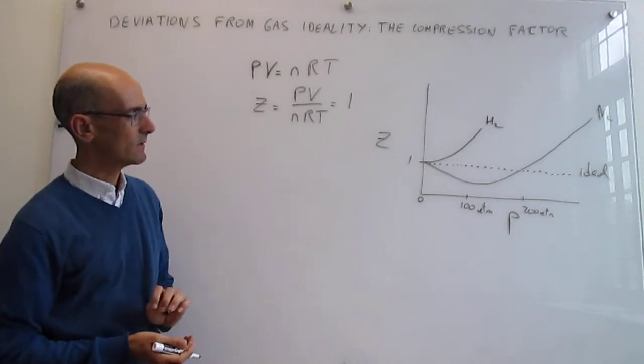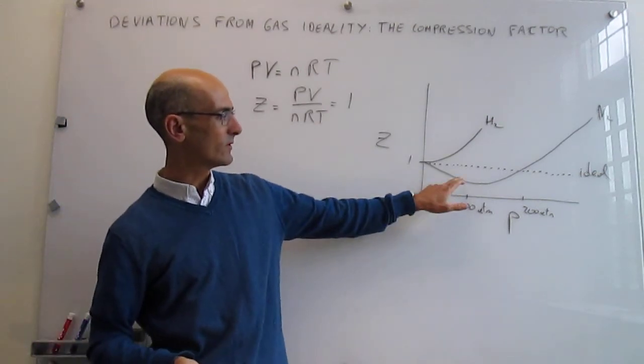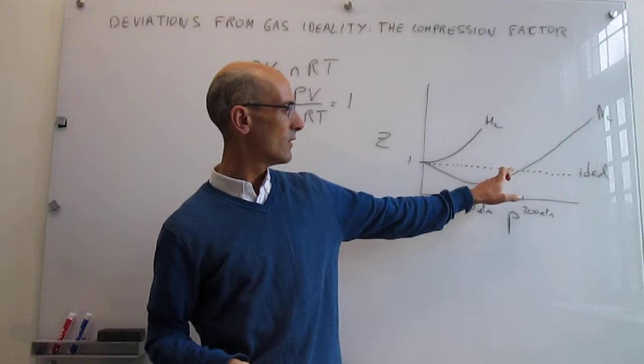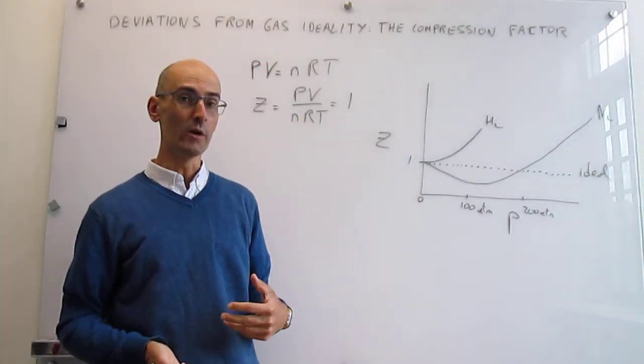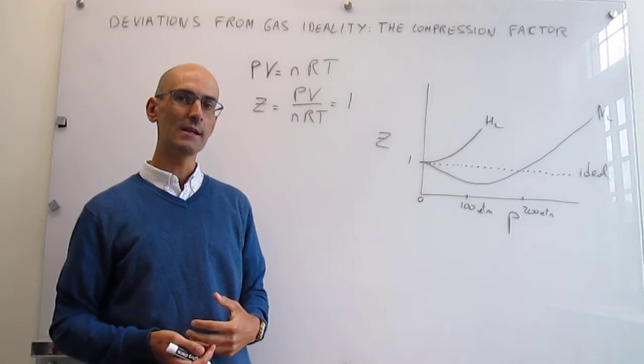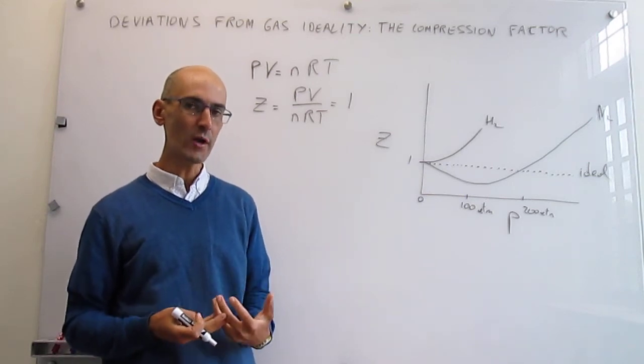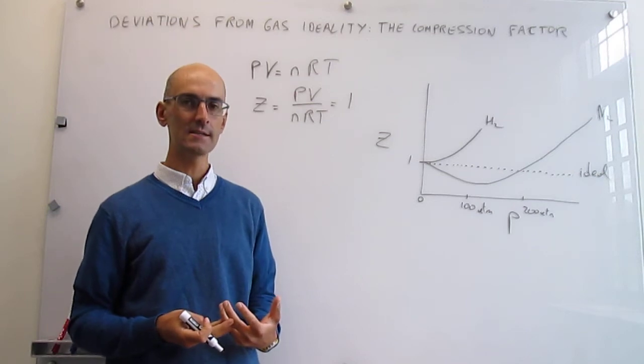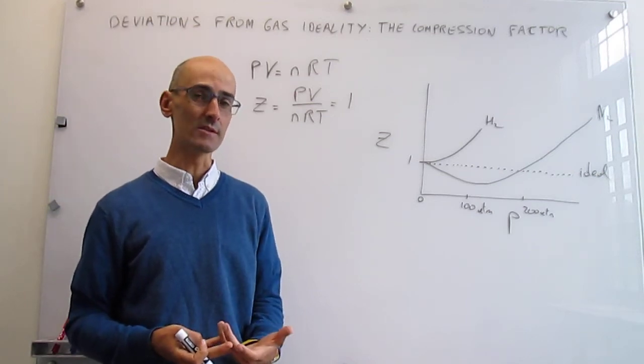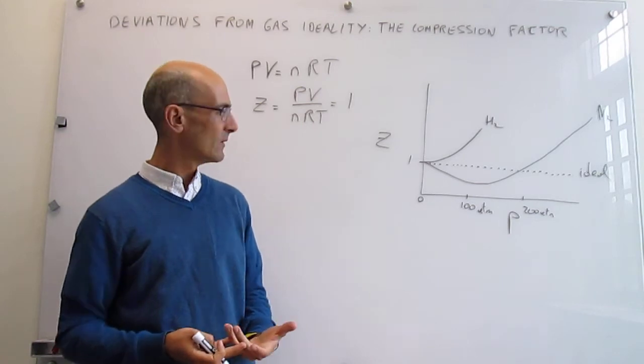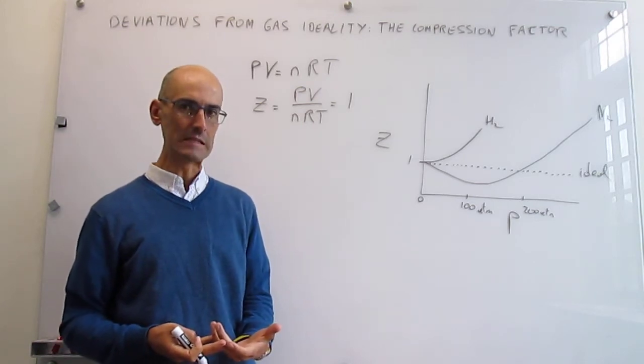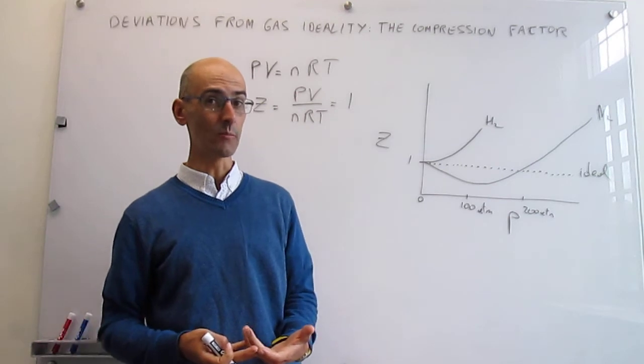Let's see what this means. Notice that for nitrogen in this range, the compression factor is actually lower than what you would expect in the ideal case. The breakdown from the ideal case is because interactions between the gas particles start to be important. What type of interactions lead to a decrease in the compression factor?